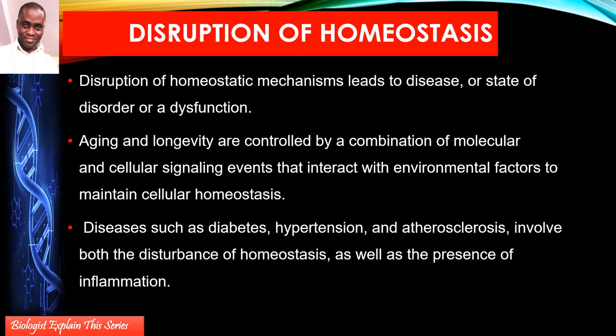Aging and longevity are indications that our system is weakening and we are losing homeostatic regulatory mastery. The body gets weaker and weaker. Many of the issues of old age are indicative of the breakdown, slowing down, or depreciation of homeostatic processes that once existed before in the body.